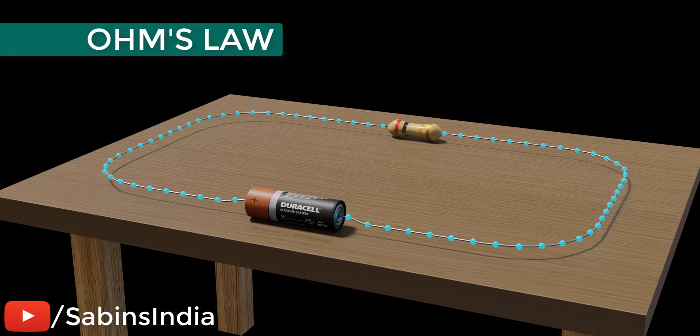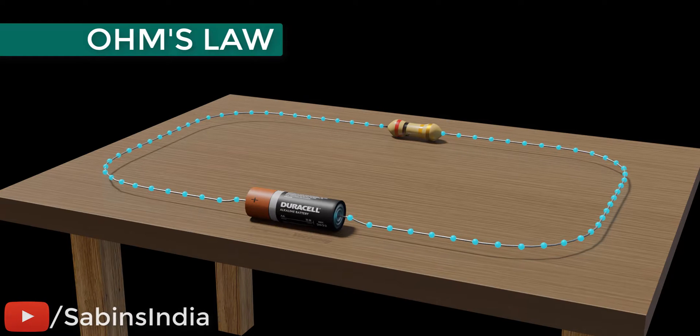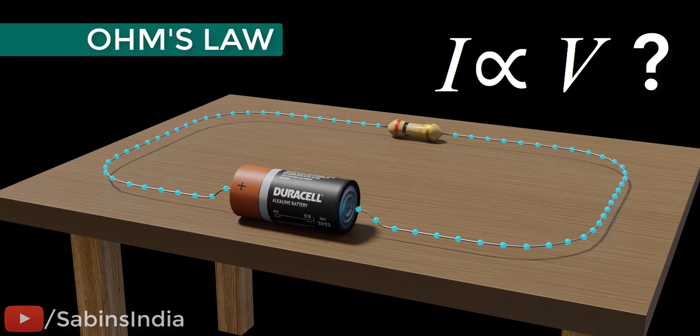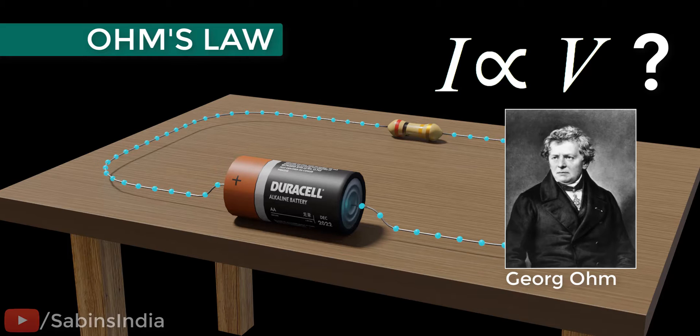Ohm's law is one of the most popular laws of physics, but do you know why current flow through a conductor is directly proportional to the voltage across it? Let's see how George Ohm's brilliant mind worked while he derived this famous law.